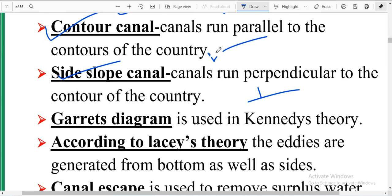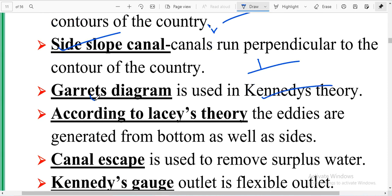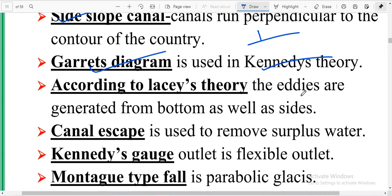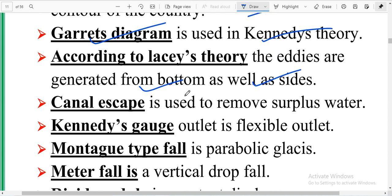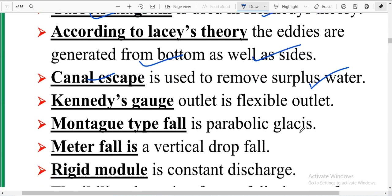Garret's diagram is used in Kennedy's theory. According to Lacey's theory, the eddies are generated from bottom as well as sides. Canal escape is used to remove surplus water. Kennedy's gauge outlet is flexible outlet.